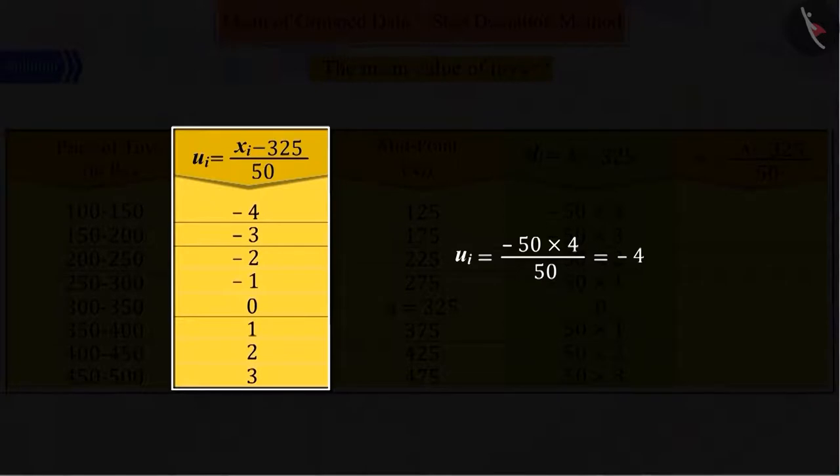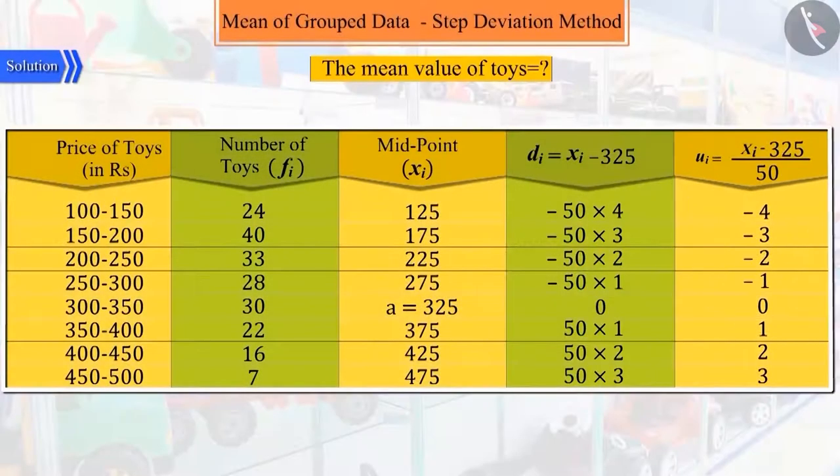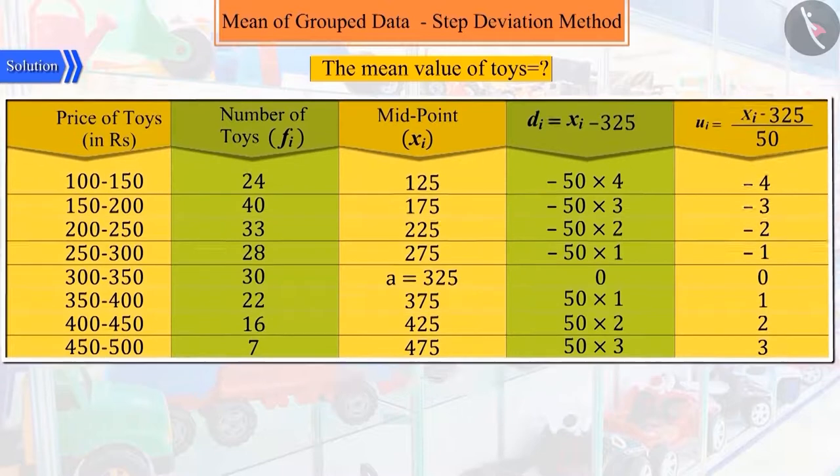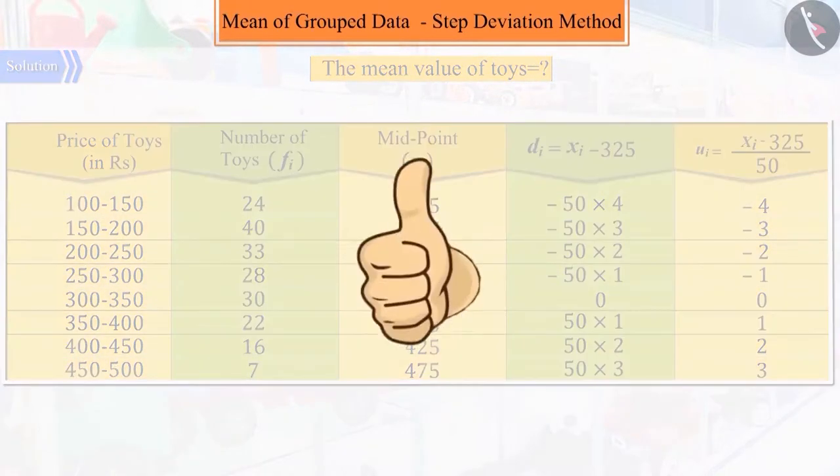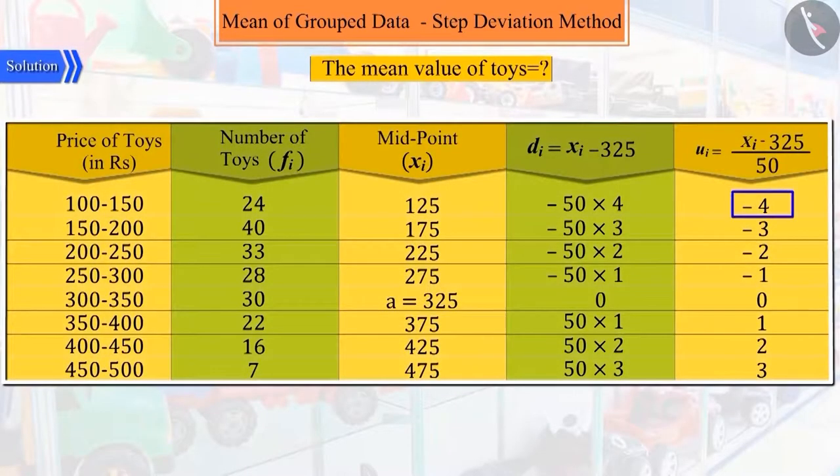From which we calculate all the ui and construct a table. Since we have to find the mean, can you tell what we will have to do to proceed? Very good! Now we multiply each ui by fi.